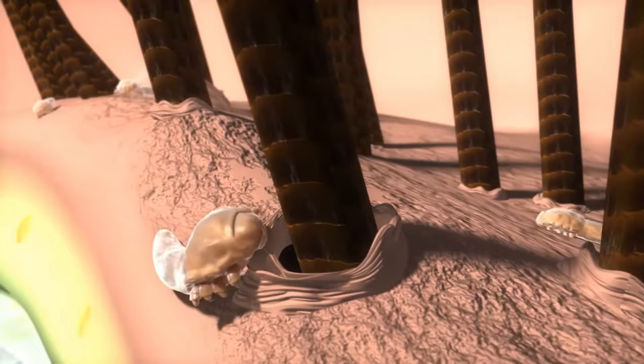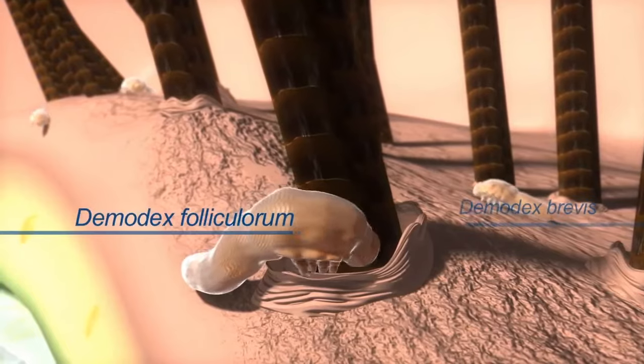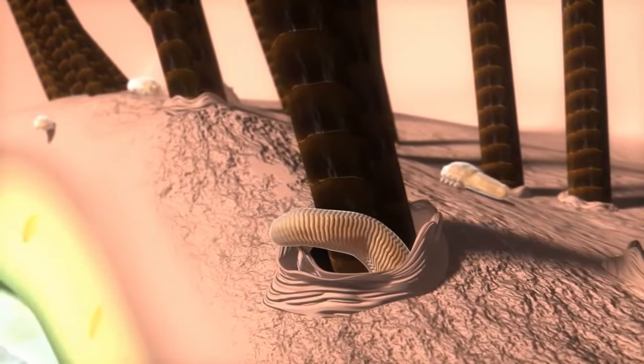There are two species of demodex, folliculorum and brevis, that live on the skin of the face and eyelids.